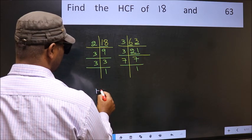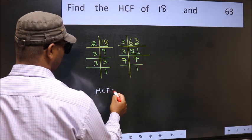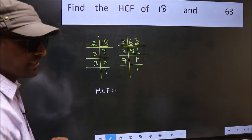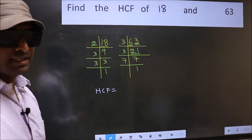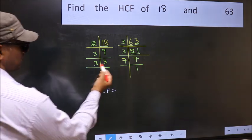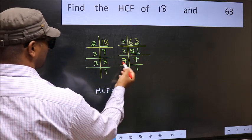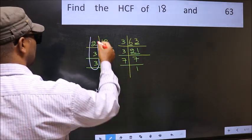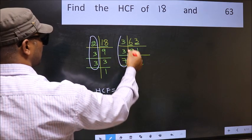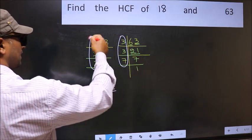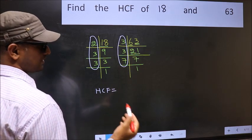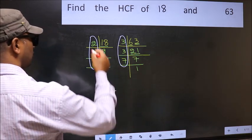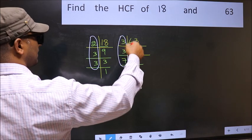Therefore, our HCF is the product of the numbers which should be present in both places—here and here. So now let us find the numbers which should be present in both.